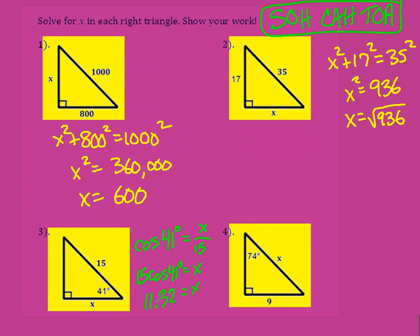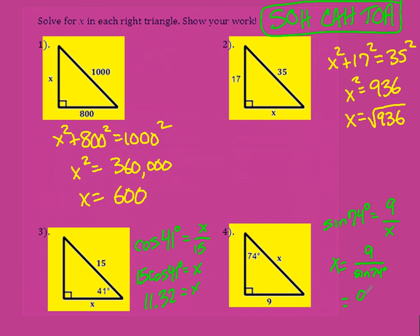For number 4, I have my angle, the side opposite of it, and the hypotenuse. Opposite and hypotenuse is sine. Sine of 74 degrees equals the opposite, which was 9, over x, my hypotenuse. When x is down low, the x and the trig function just switch. So I still have 9 up top and sine of 74 degrees on the bottom: 9 divided by sine of 74, and I get 9.36 as my answer.